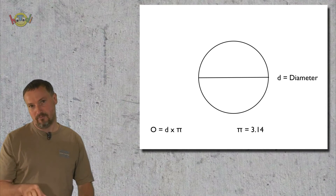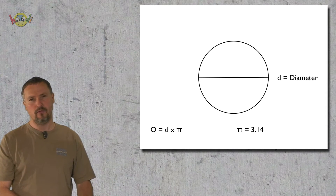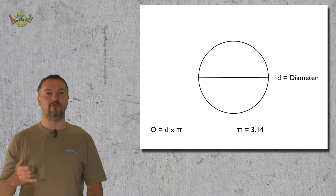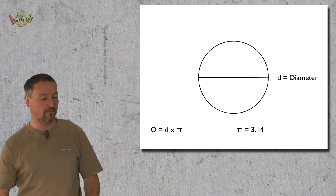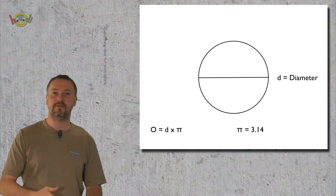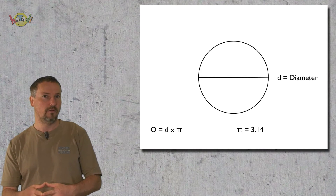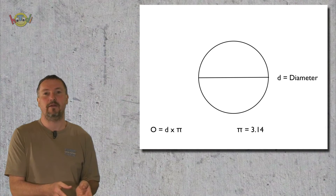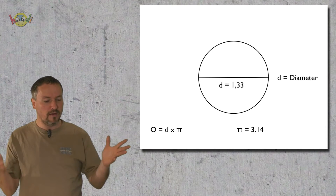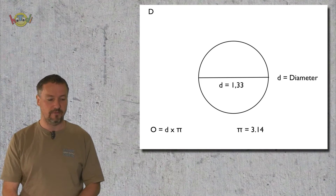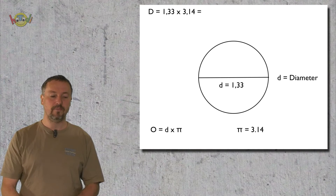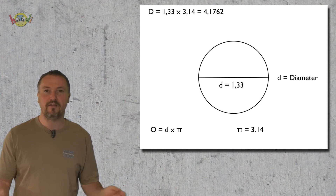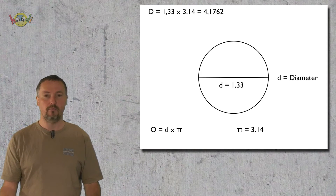Now we want to measure the outline — the circumference. It's quite simple to calculate, really easy — you don't even have to strain your brain. What we need is to multiply the diameter by Pi. That's it. So for example with a diameter of 1.33: 1.33 multiplied by 3.14 equals 4.1762. That's the outline — no more to do.